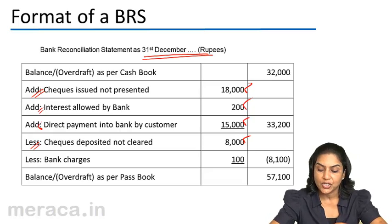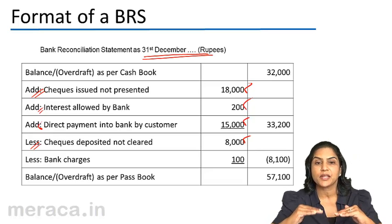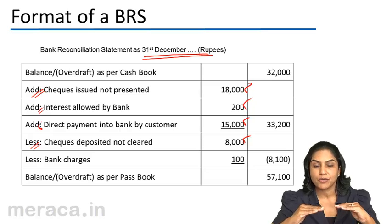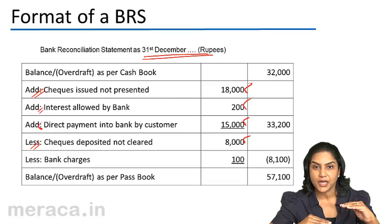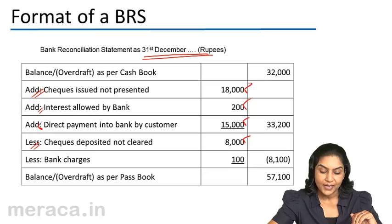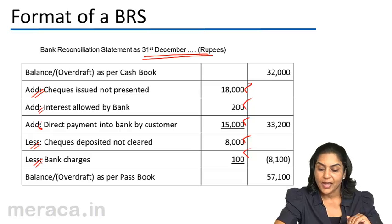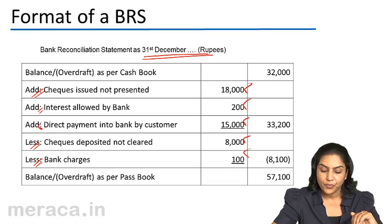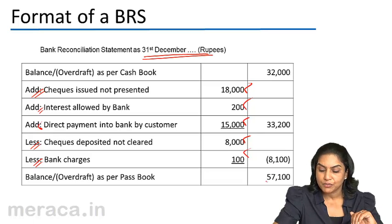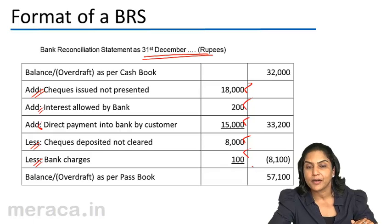What about bank charges? When there are bank charges, the passbook balance goes down. We have started from the cashbook and we arrive at the passbook balance, so we deduct bank charges. Therefore, we get the balance as per passbook as $57,100.